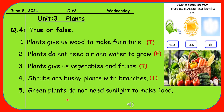Sentence five is: Green plants do not need sunlight to make food. We have read that green plants can make their own food through the process called photosynthesis. To make food, they need sunlight, air, and carbon dioxide gas. So the statement that they do not need sunlight is incorrect — it is False. Write F. That's it for today's lesson. Allah Hafiz and take care.